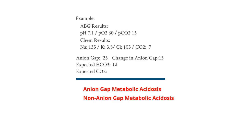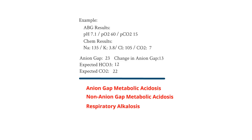Now let's calculate our expected CO2. Our expected CO2 is 15 plus our actual bicarb, so 15 plus 7 is 22. Given the actual CO2 is 15, which is less than our expected CO2 of 22, we have a respiratory alkalosis present as well. So we have an anion gap metabolic acidosis, a non-anion gap metabolic acidosis, and a respiratory alkalosis — a triple disorder that we're able to figure out in 7 easy steps.